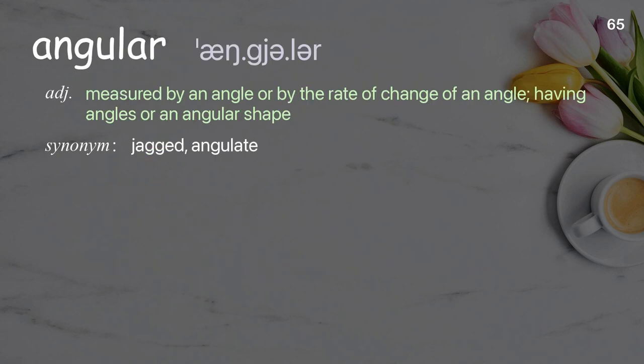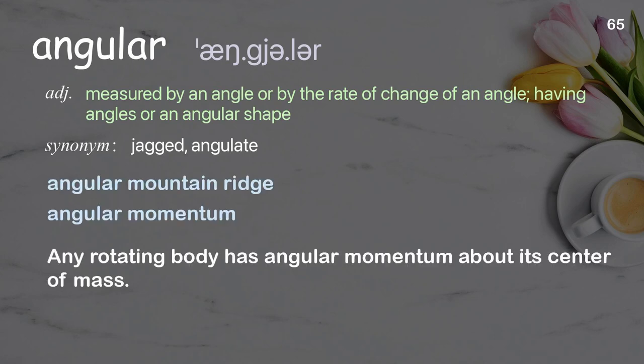Angular. Measured by an angle, or by the rate of change of an angle; having angles, or an angular shape. Examples: angular mountain ridge, angular momentum. Any rotating body has angular momentum about its center of mass.